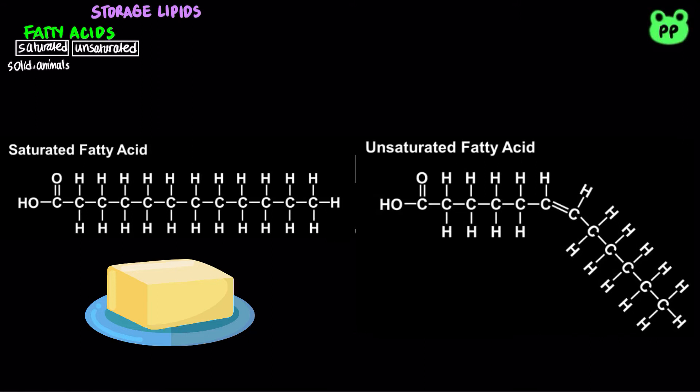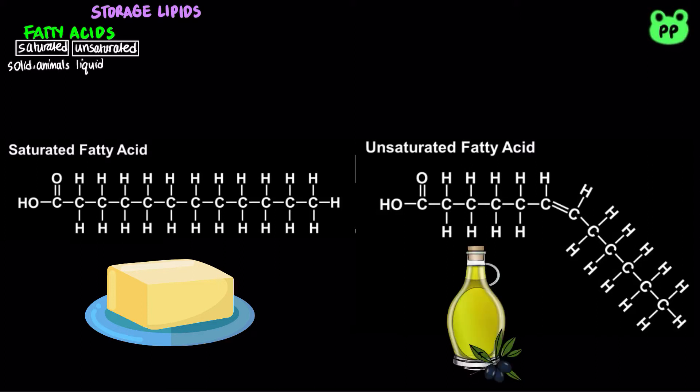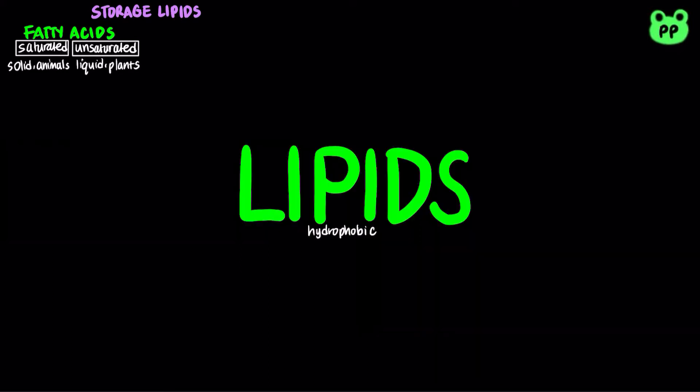Unsaturated fatty acids have one or more double bonds and form kinks when they stack together. As a result, their melting points are lower and they are usually liquid at room temperature. Most plant and fish oils are unsaturated.